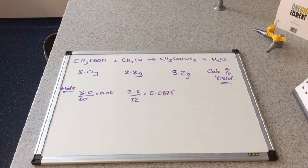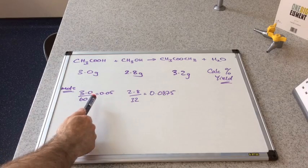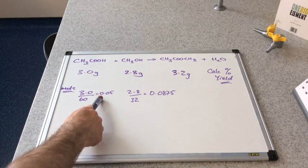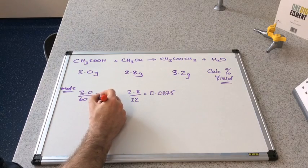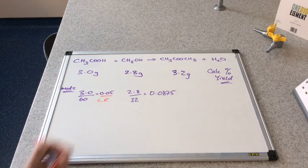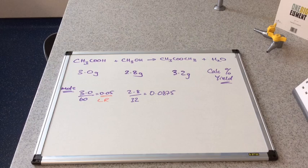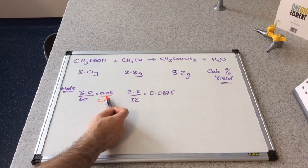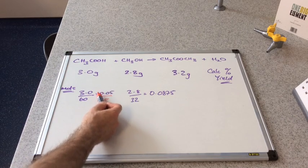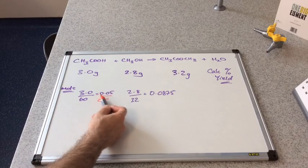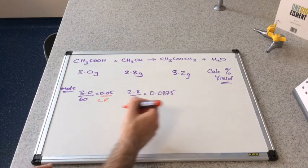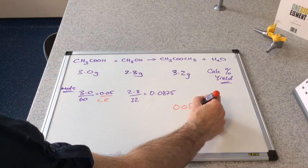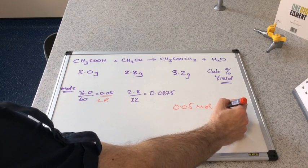I've calculated the moles, and you can see that, in actual fact, it's the carboxylic acid that is the fewest in moles. So this is our limiting reagent. That means the maximum possible number of moles of ester produced is based on this number here. Because it's a one-to-one ratio, that means that only 0.05 moles are possible.